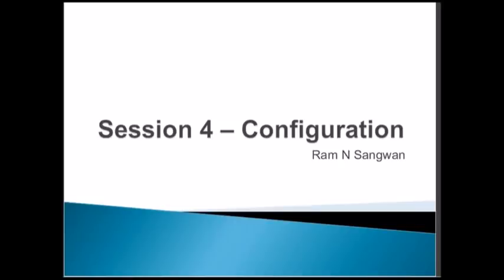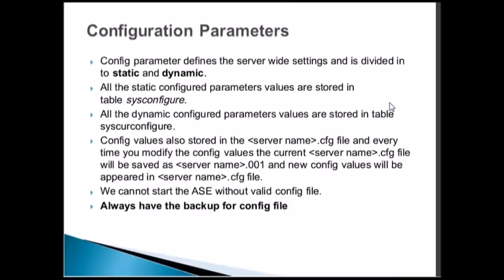The objective of this session is to understand configuration parameters — checking various settings, where these options are available, and how to change parameters and values. Configuration parameters are the most important thing for any optimization or DBA work. They define server-wide settings and are divided into two categories: static and dynamic. Static variables are stored in the table sysconfigure; dynamic configuration parameters are stored in syscurrconfigure.